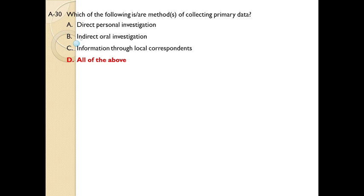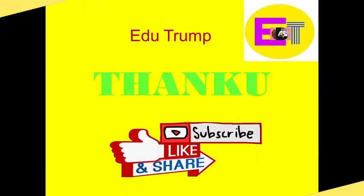Question 20: What is secondary data — data collected in the process of investigation, none, both, or data collected from some other agency? The correct answer is D — secondary data is collected from some other agency. I hope you have understood the concepts of primary data and secondary data, sources of data, importance of data, advantages and disadvantages of both, similarities and differences, and the multiple choice questions from previous NET examinations. If you liked the content, please like, share, and subscribe to the channel.